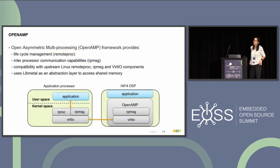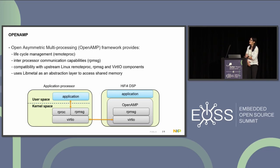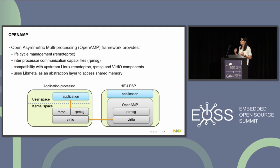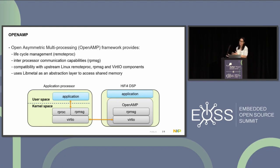The last framework is OpenAMP for inter-process communication. This encapsulates the Remote Proc and RPMSG frameworks, provides runtime libraries and tooling, and eases up communication between cores. OpenAMP can run on Linux, real-time OSes, and also bare metal — it uses libmetal to access the shared memory. In our use case, we use OpenAMP just on the Zephyr side — on the HiFi 4 DSP — because on Linux we have the generic frameworks already running: Remote Proc, RPMSG, and virtio, which communicates with the virtio from OpenAMP in Zephyr.